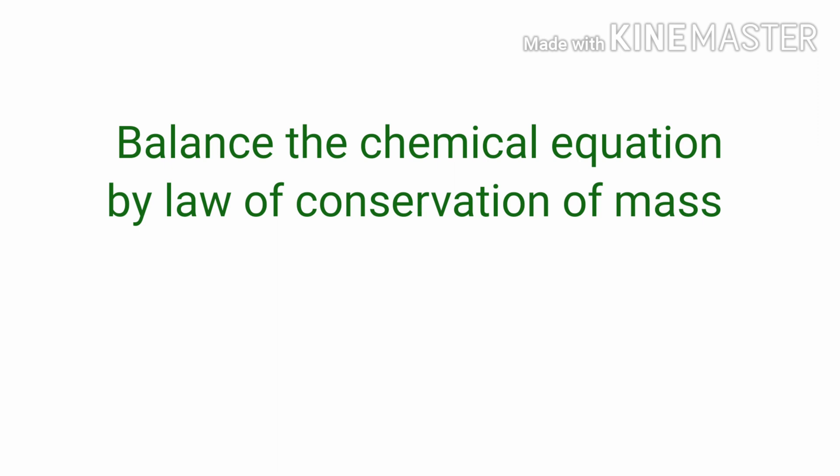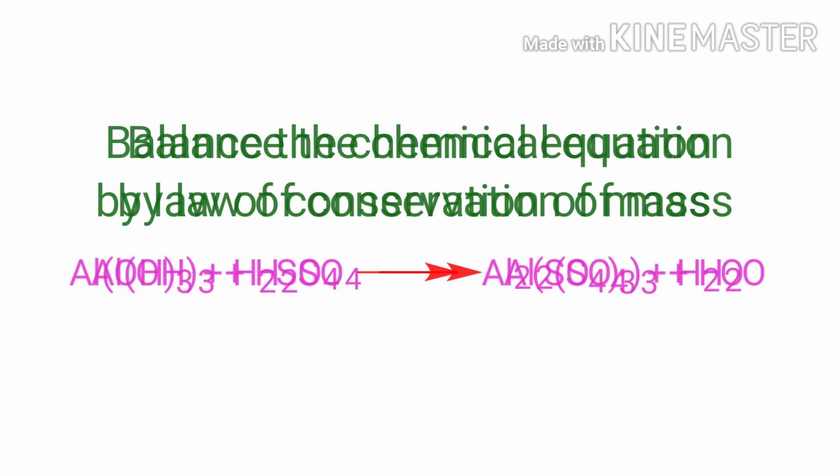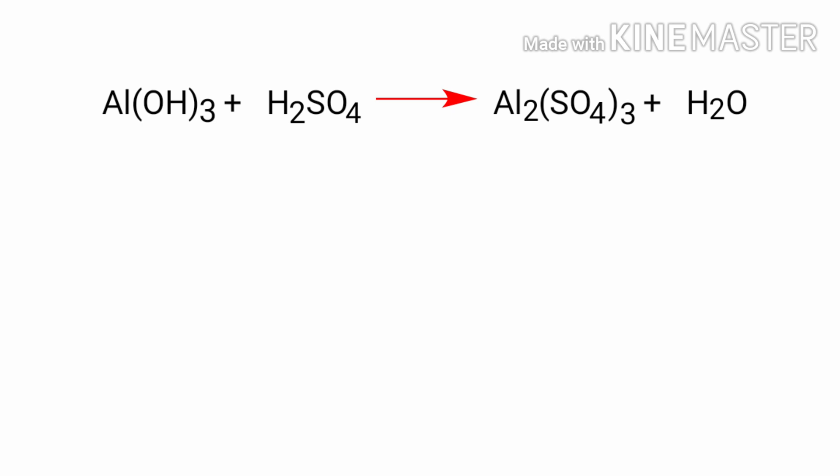Balance the chemical equation by law of conservation of mass. Aluminum hydroxide plus sulphuric acid gives us aluminum sulphate plus water. In this equation, the reactants are aluminum hydroxide and sulphuric acid, and the products are aluminum sulphate and water.